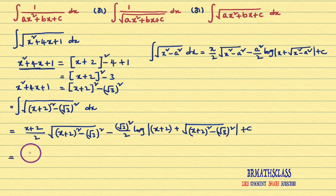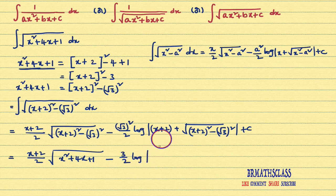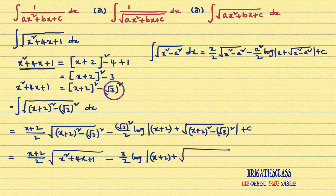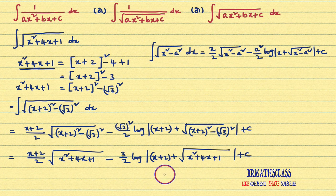We can write one more simplification step. That is (x + 2)/2 · √(x² + 4x + 1) - 3/2 · log|(x + 2) + √(x² + 4x + 1)| + c. In place of (x + 2)² - (√3)², we can write x² + 4x + 1. That's it. These problems are very easy. Only a little bit of practice is needed. You practice 4 to 5 problems of the same model continuously and you will find this model very easy.